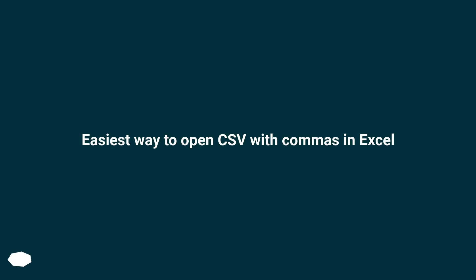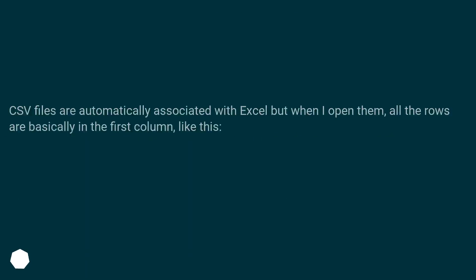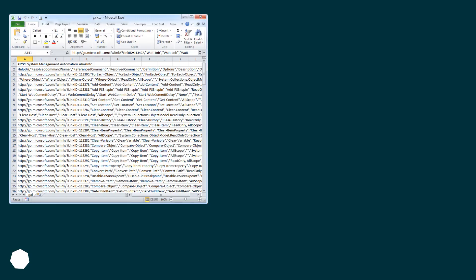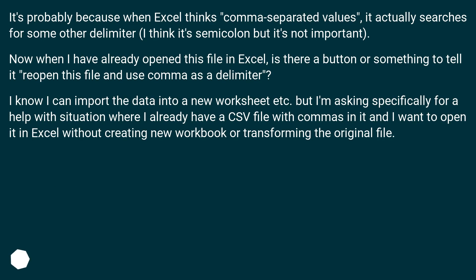The easiest way to open a CSV with commas in Excel. CSV files are automatically associated with Excel, but when opened, all the rows end up in the first column. This is probably because Excel searches for a different delimiter — likely semicolon — rather than comma.